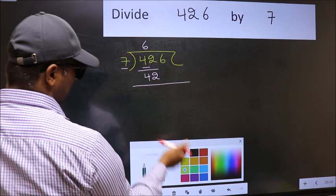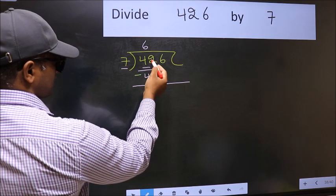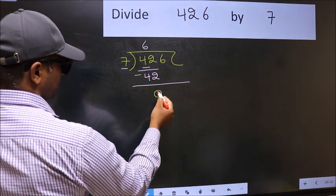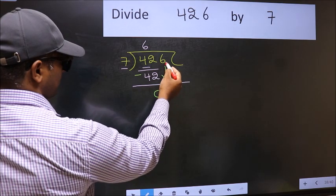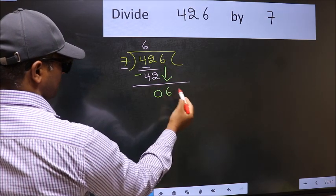Now, you should subtract. 42 minus 42, 0. After this, bring down the beside number. So, 6 down.